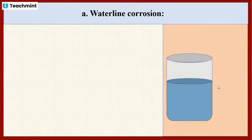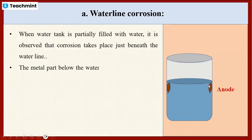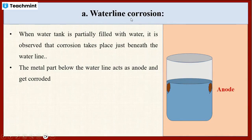In differential aeration corrosion, two types of corrosion take place. One is waterline corrosion. This type of corrosion is normally observed in water tanks and ocean-going ships. When the water tank is partially or half filled with water, the corrosion takes place just below the waterline. This type of corrosion is known as waterline corrosion.